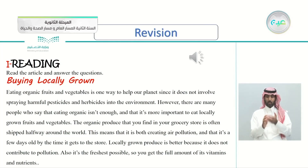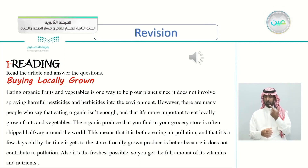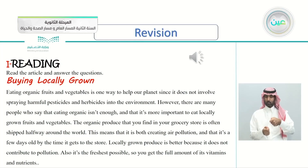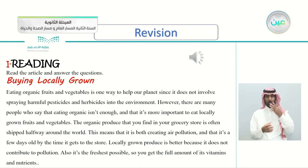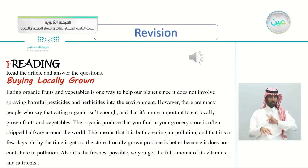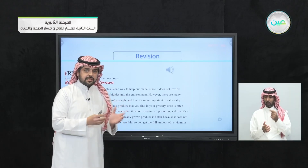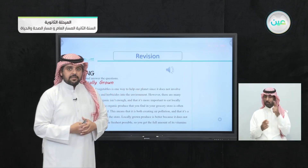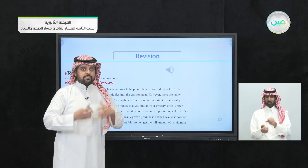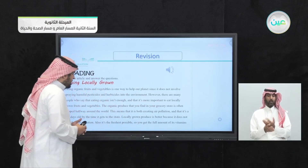Eating organic fruits and vegetables is one way to help our planet since it does not involve spraying harmful pesticides and herbicides. However, many people say eating organic isn't enough and that eating locally grown food is more important. Organic produce in grocery stores is often shipped halfway around the world, creating air pollution and arriving a few days old. Locally grown produce does not contribute to pollution and is fresher, giving you the full amount of vitamins and nutrients.